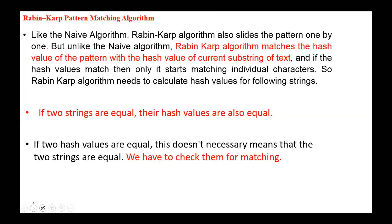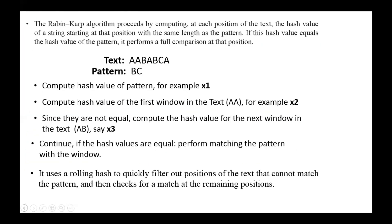So Rabin-Karp algorithm needs to calculate hash values for the following strings. If two strings are equal, then their hash values are also equal. But if two hash values are equal, this does not necessarily mean that the two strings are equal — we have to check them for matching. The algorithm proceeds by computing, at each position of the text, the hash value of a string starting at that position with the same length as the pattern. If this hash value equals the hash value of the pattern, it performs a full comparison at that position.